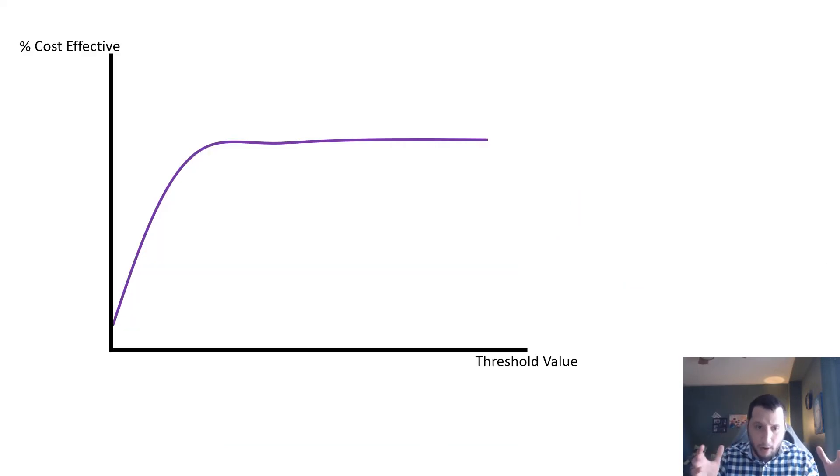This is our cost-effectiveness acceptability curve that we have, otherwise known as a CEAC. How do we incorporate thresholds in this, and what interpretation does it take on?